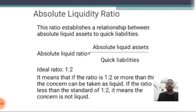And last, the absolute liquidity ratio establishes the relationship between absolute liquid assets and quick liabilities. Absolute liquidity ratio equals absolute liquid assets divided by quick liabilities. The ideal ratio is 1:2. If the ratio is 1:2 or more, the concern can be taken as liquid. If the ratio is less than the standard of 1:2, it means the concern has a poor liquidity position. Thank you.